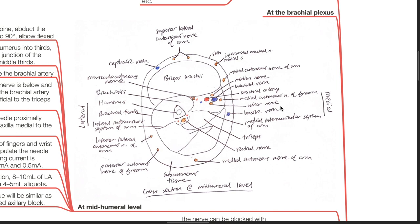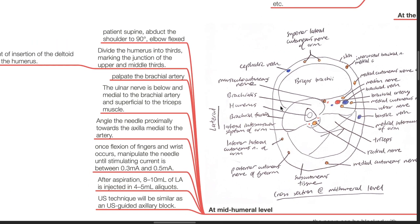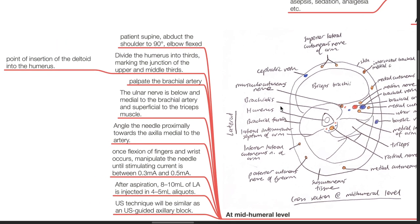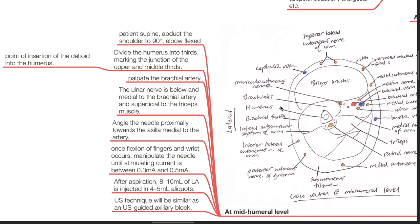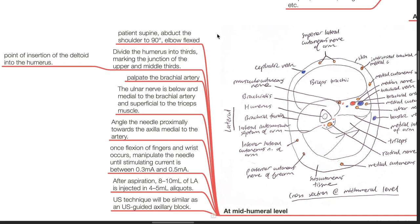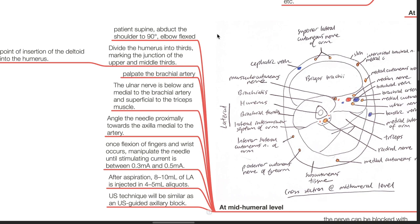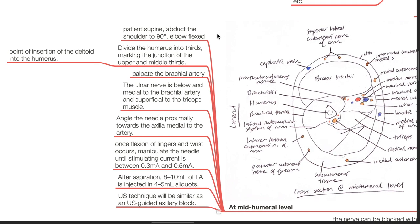At the mid-humeral level, the ulnar nerve can be blocked. Position the patient supine, abduct the shoulder to 90 degrees with the elbow flexed. Divide the humerus into thirds, marking the junction of the upper and middle thirds, which is the point of insertion of the deltoid into the humerus.